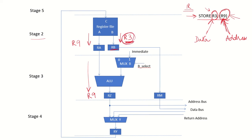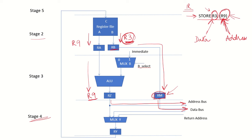The contents of R3, which is the data to be stored in memory, are passed on to inter-stage register RM in stage 3. In stage 4, the memory address from R9 is passed on to the address bus and the data available in RM is passed on to the data bus and sent to the memory. The data from R3 is now stored at this address. In stage 5, which is the write back stage, nothing is required to be stored back in the register file, so no action takes place.